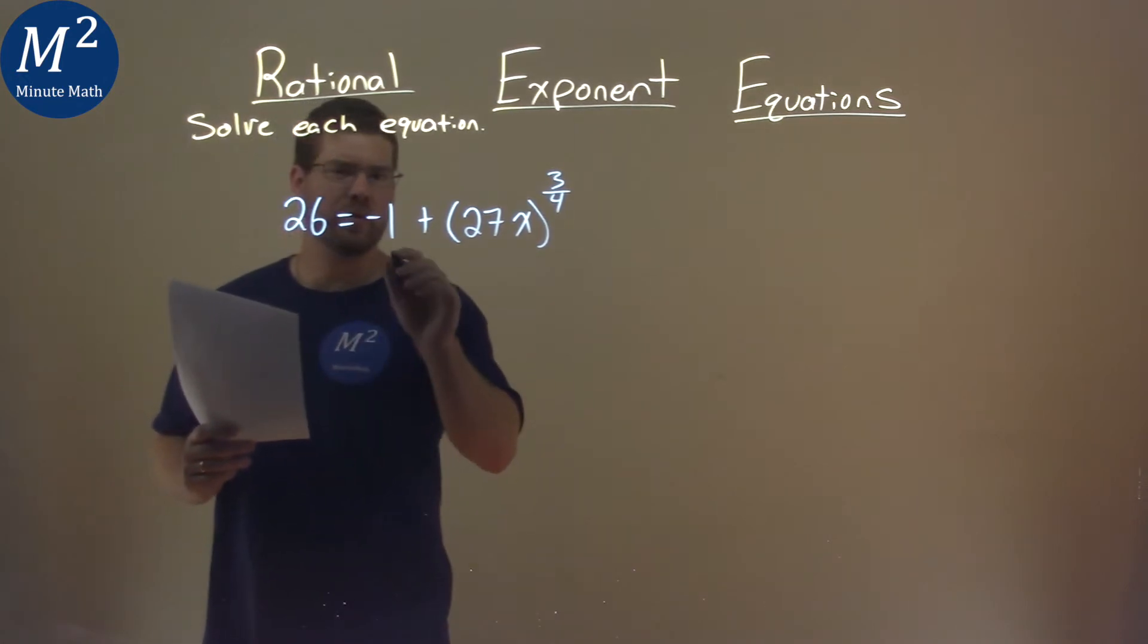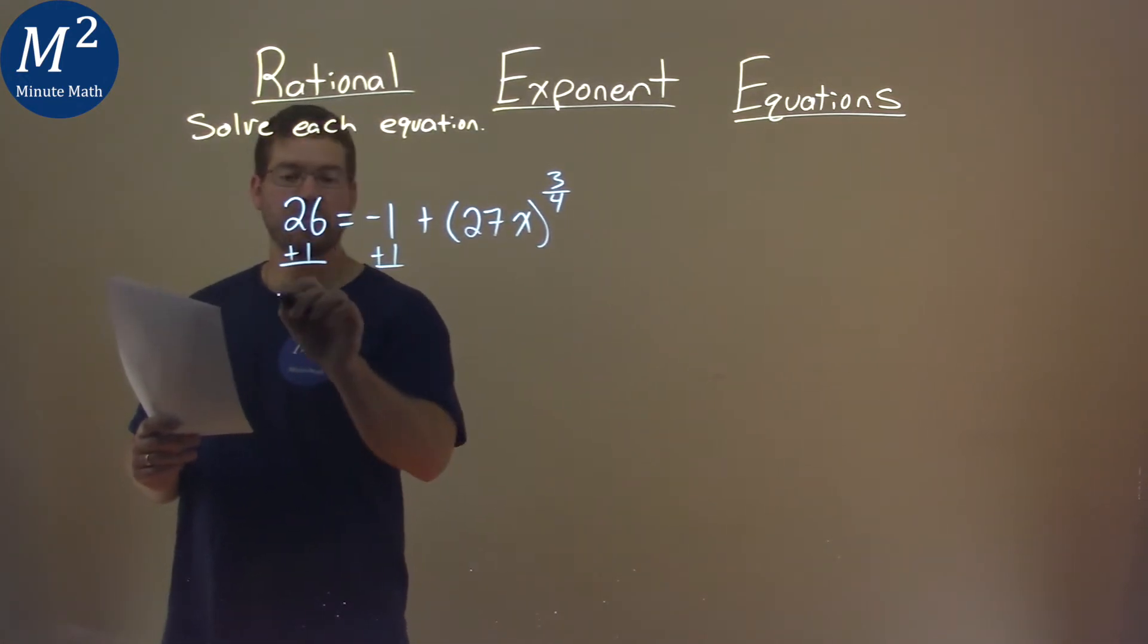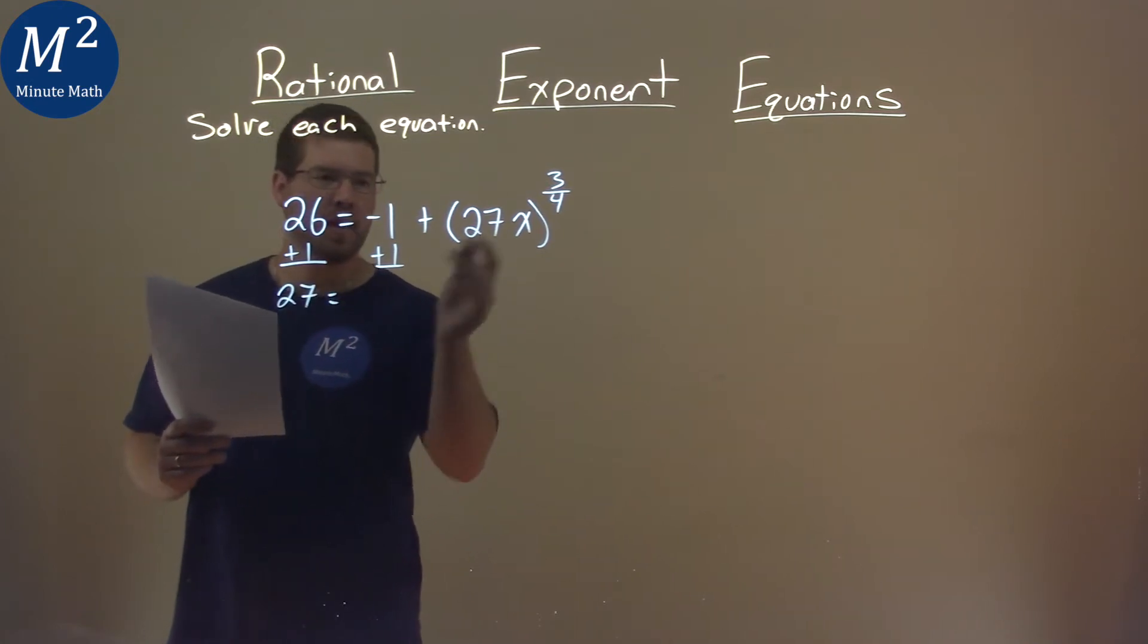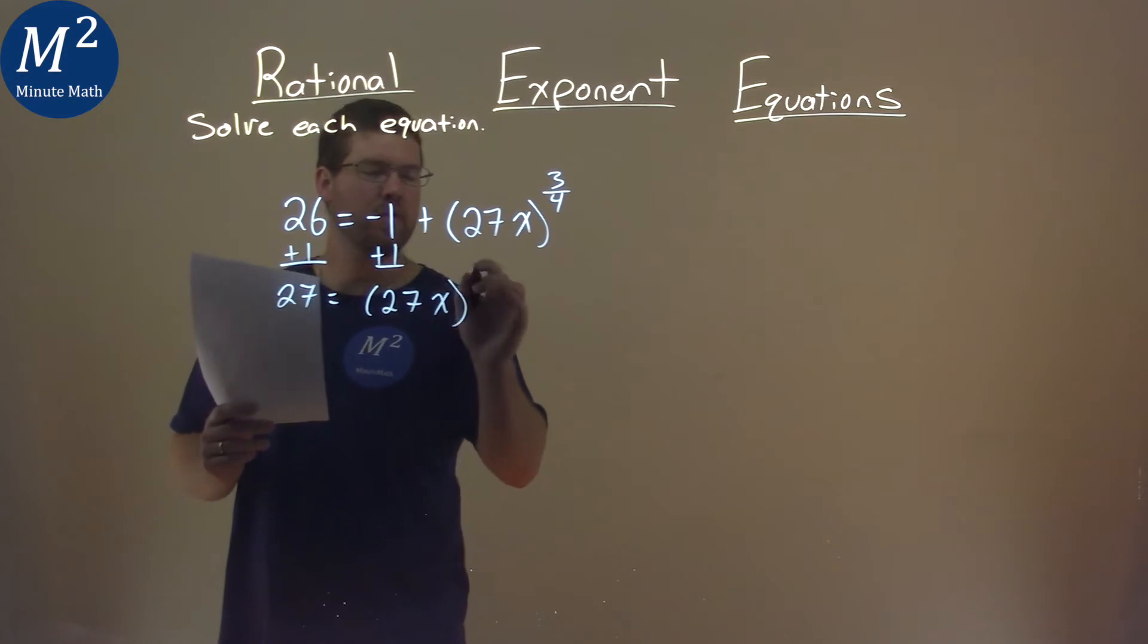We need to add 1 first to both sides. Let's bring that over. 26 plus 1 is 27, and then we bring down the other parts, 27x all to the 3 fourths power.